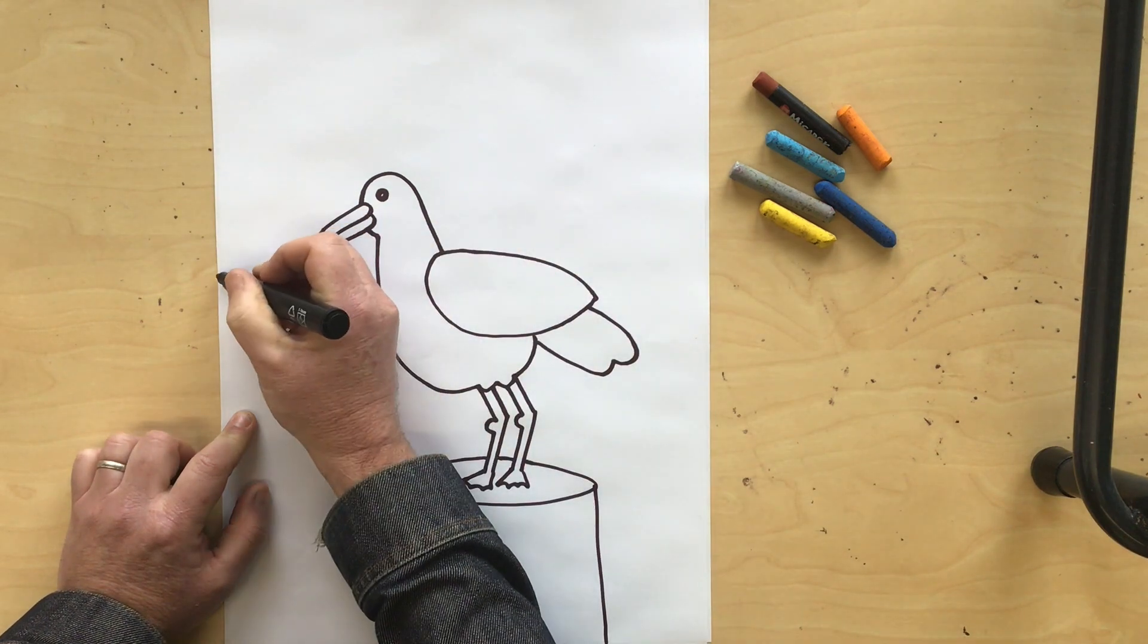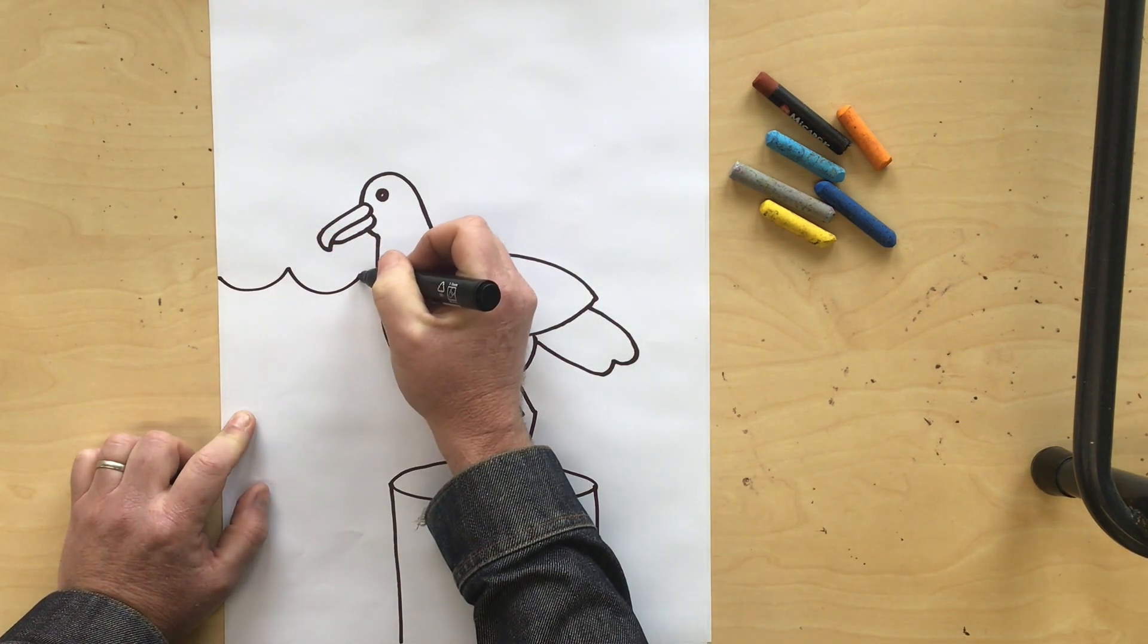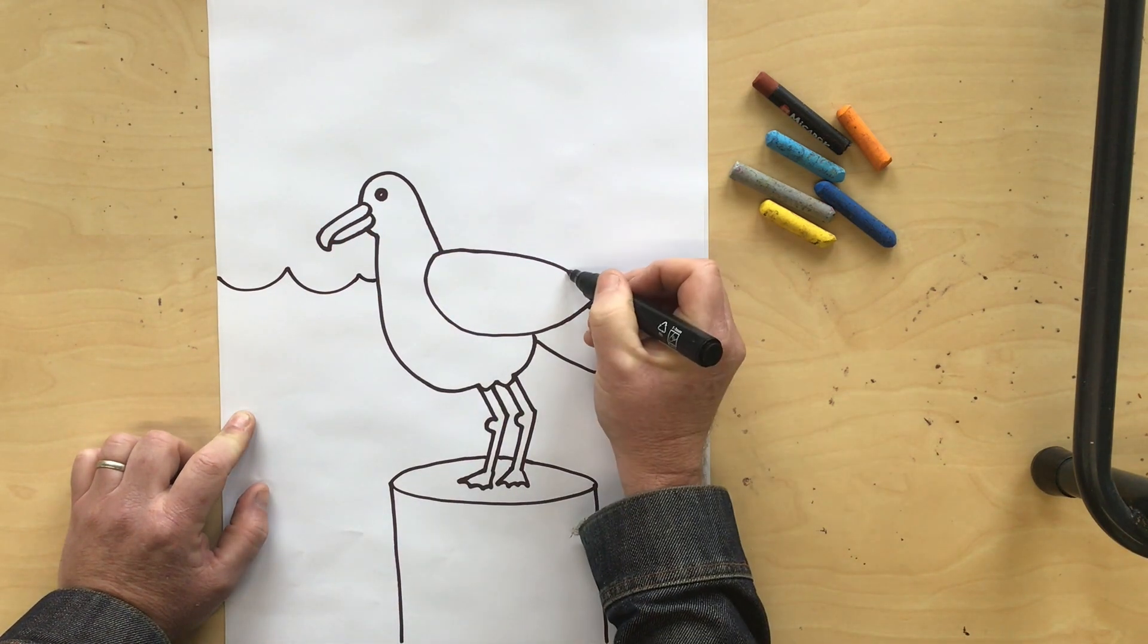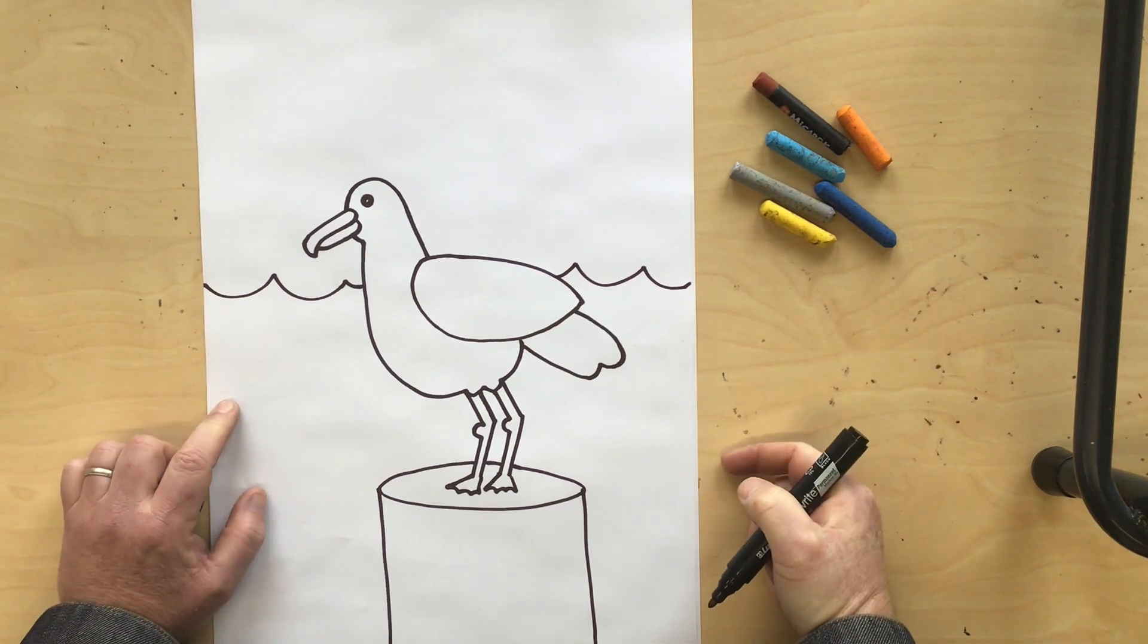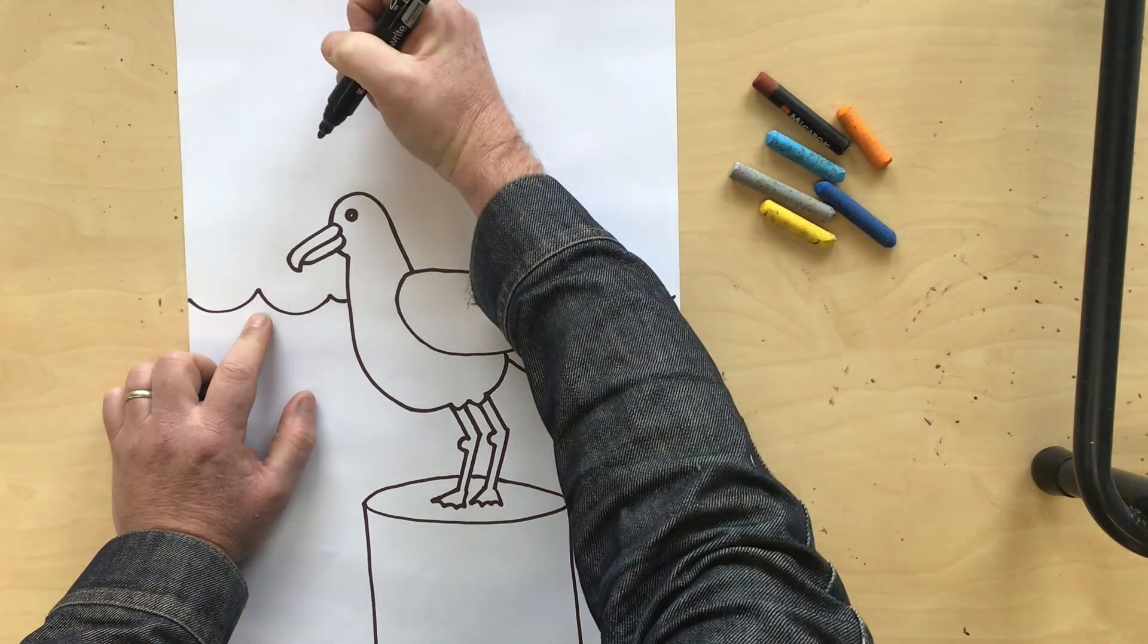Now to make him look like he's at the sea, we'll put some waves in the background, just stop at his body and we'll continue it the other side. And what about some more seagulls in the sky?